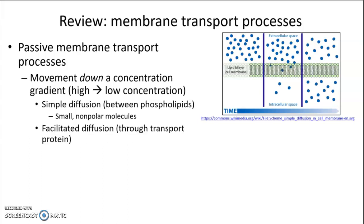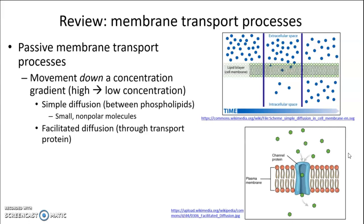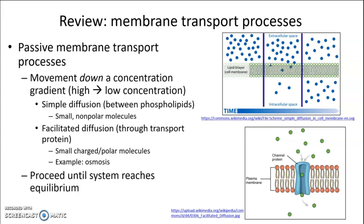Another process we looked at is facilitated diffusion, which is similar, but molecules move across the membrane by going through a transport protein. Molecules move down their concentration gradient from high concentration to low, but rather than going through the phospholipids, they go through a transport protein. This occurs when we have molecules that are still small but charged or polar, and the classic example is osmosis, or the movement of water across a membrane. These processes proceed until equilibrium and do not require any additional energy — they're completely based on the kinetic energy and natural motion of the molecules.